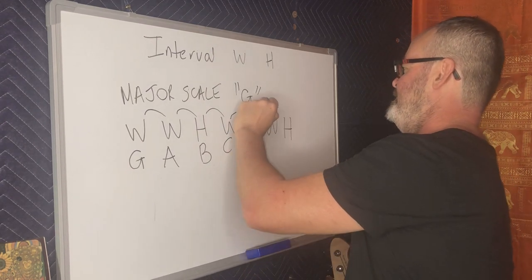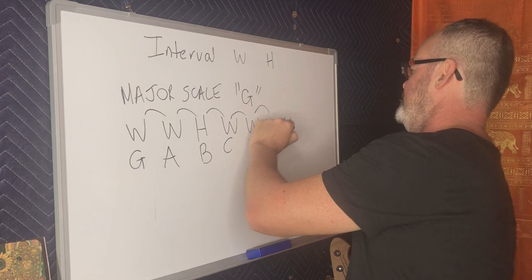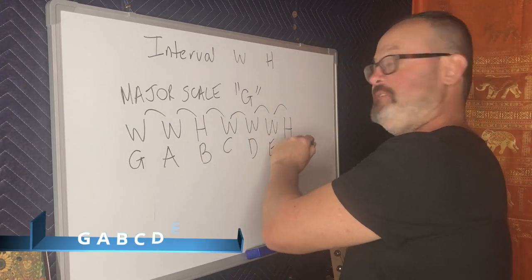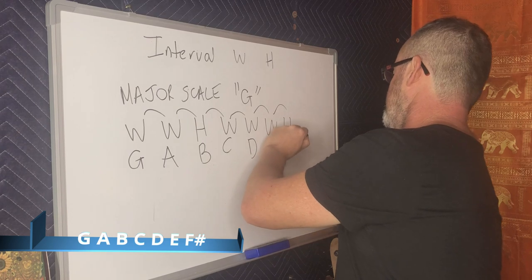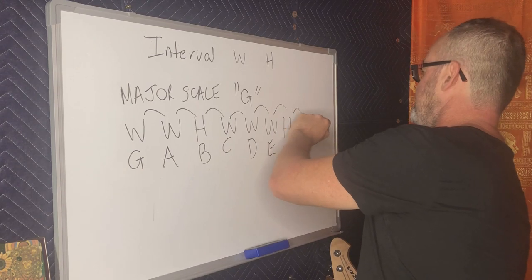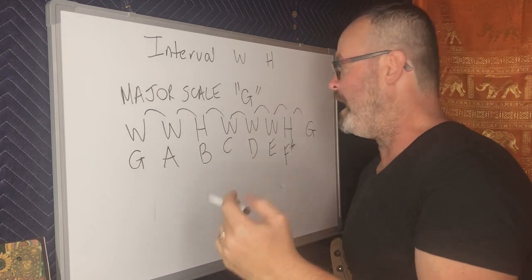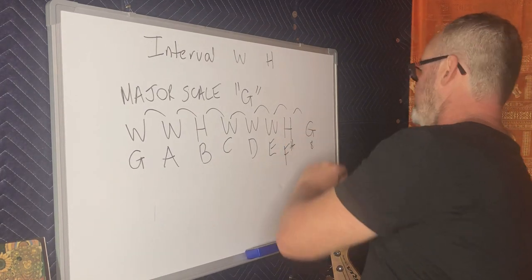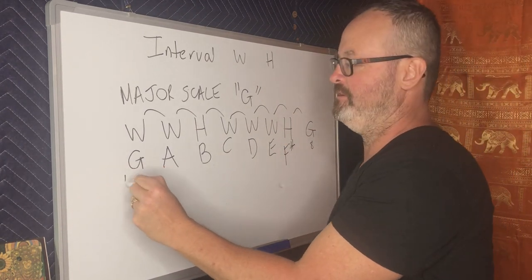Whole, D, whole, E, another whole gives us F sharp. And then a half step will bring us back to G, but just the octave higher, oftentimes referred to as the eighth, given that this is the first.